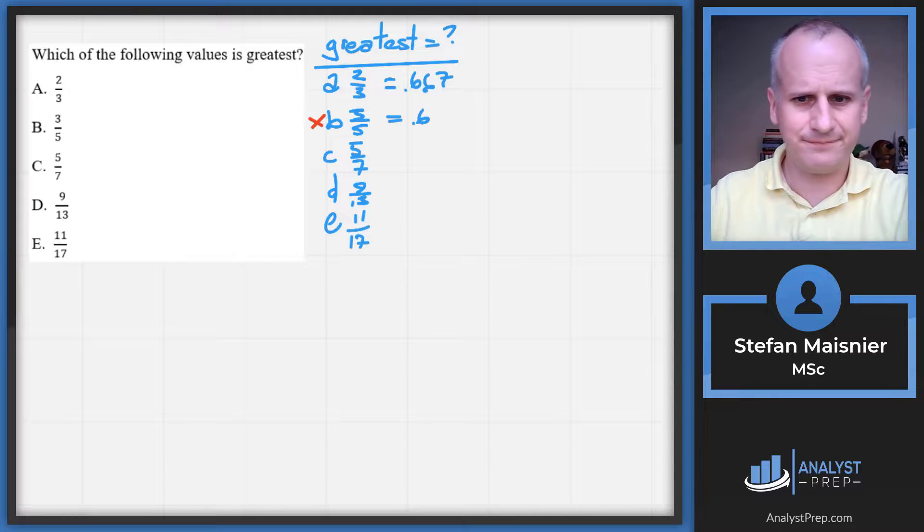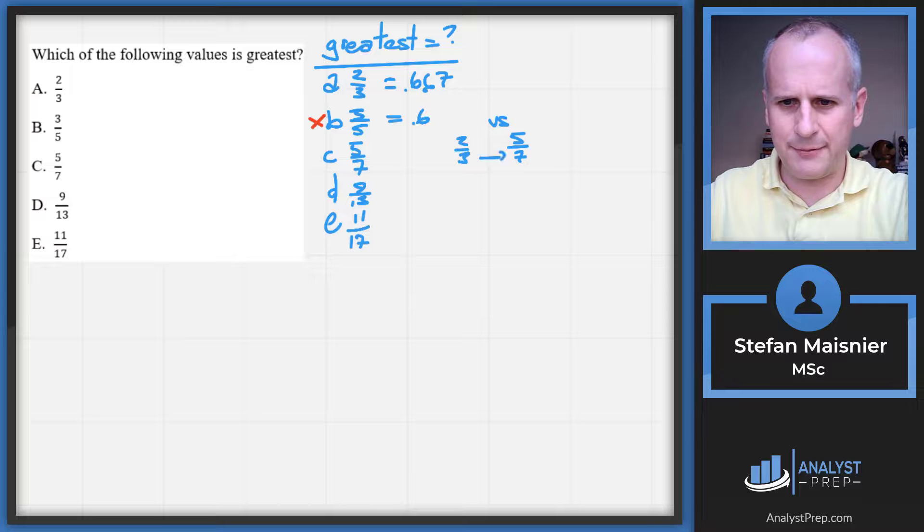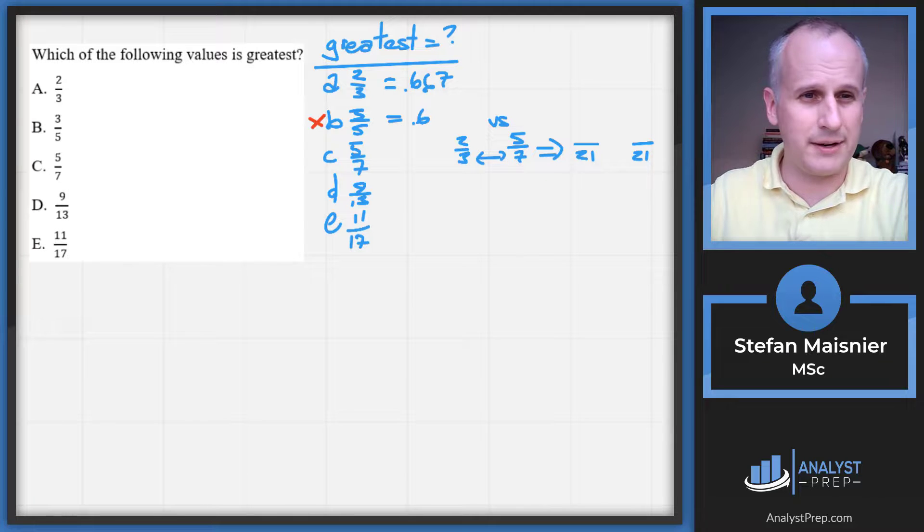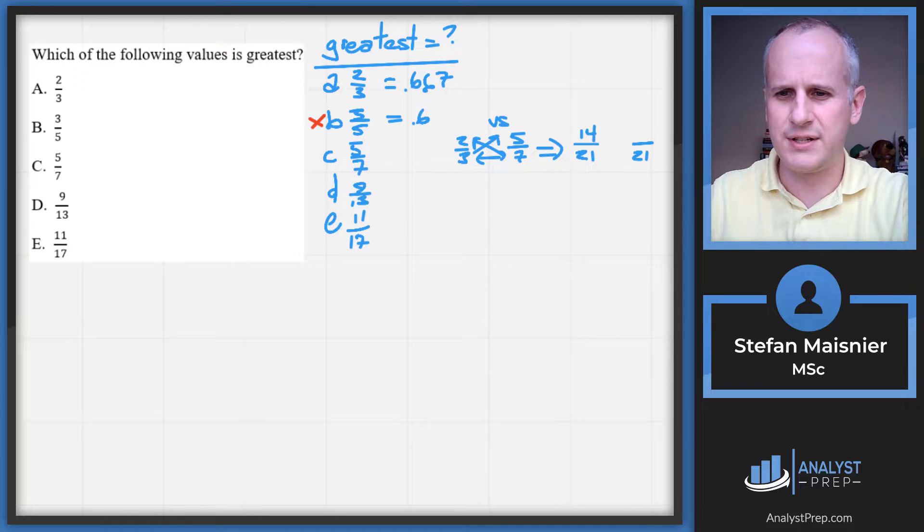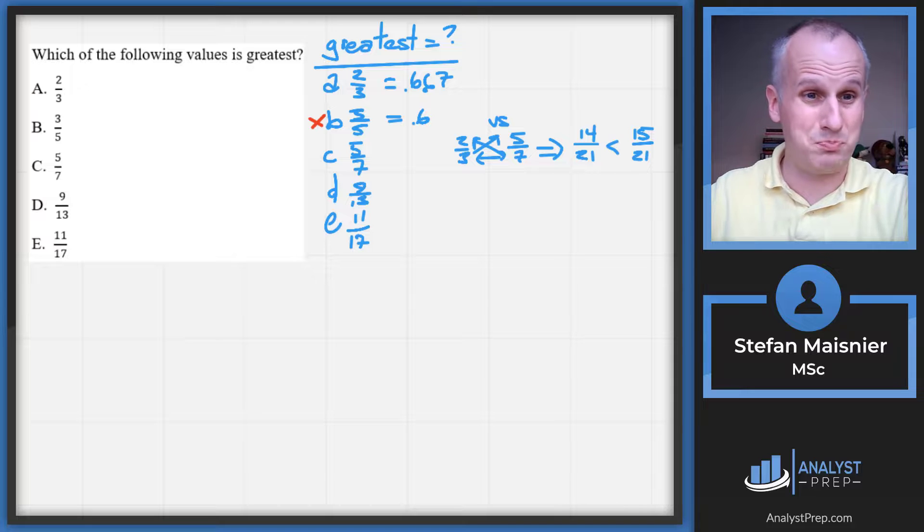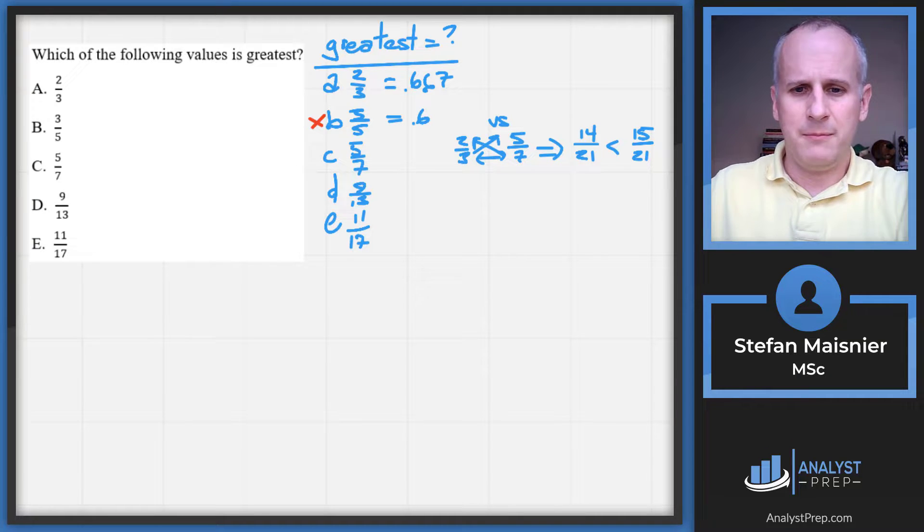Using the bow tie, compare two thirds versus five sevenths. Get a common denominator of 21 by multiplying the bottoms. Cross multiply numerators: two thirds is 14 twenty-firsts and five sevenths is 15 twenty-firsts. So C is greater than A, and A is now out of contention.